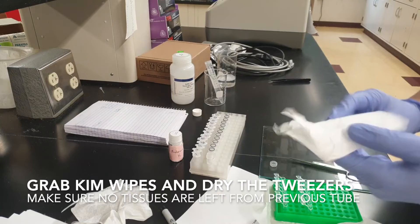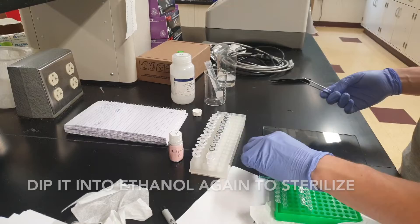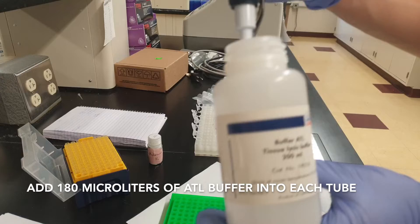Before moving to the next tissue, dip your tweezers into micro-solution, use a chemtech wipe to clean any excess tissues that might be left from the previous tube, then dip into ethanol to sterilize. Repeat the process for the rest of your tissues.